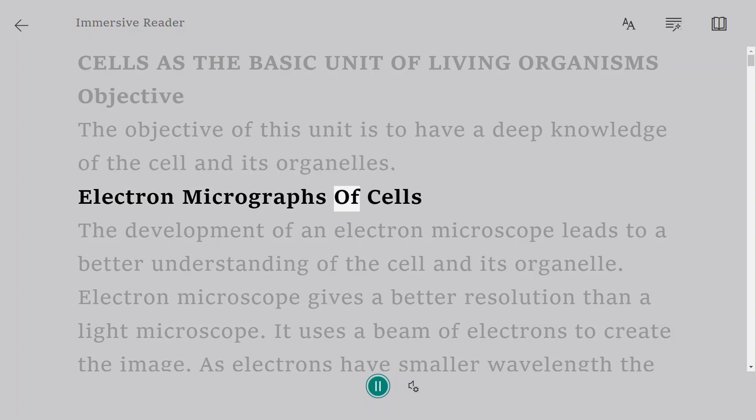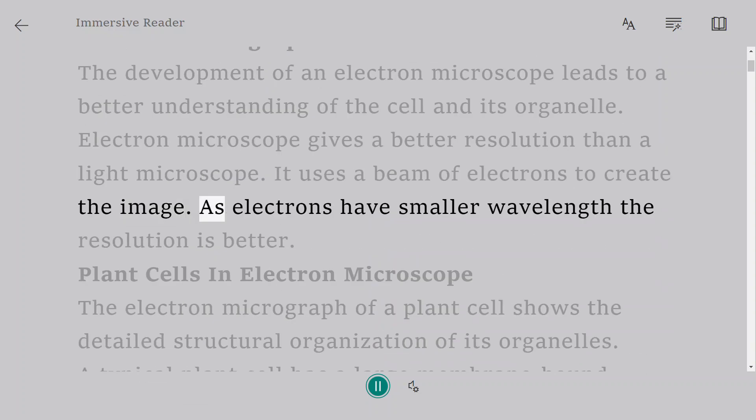Electron micrographs of cells. The development of an electron microscope leads to a better understanding of the cell and its organelle. Electron microscope gives a better resolution than a light microscope. It uses a beam of electrons to create the image. As electrons have smaller wavelength the resolution is better.